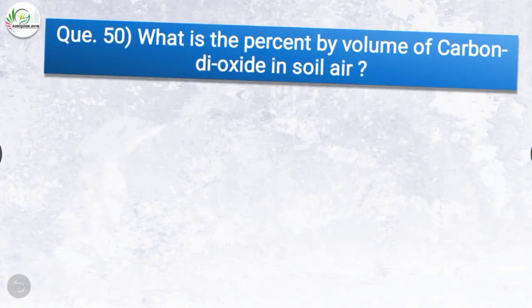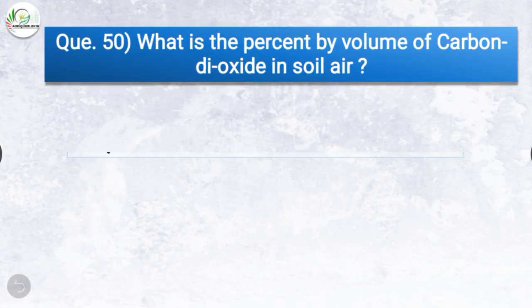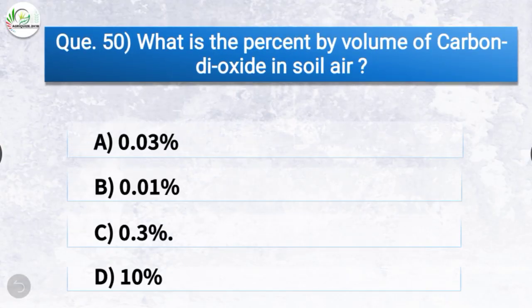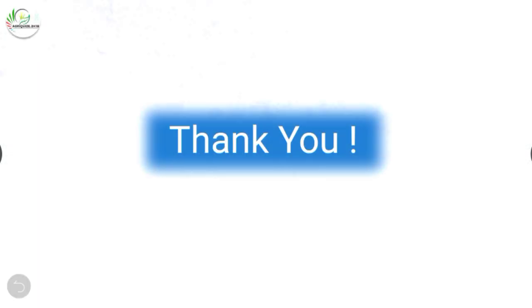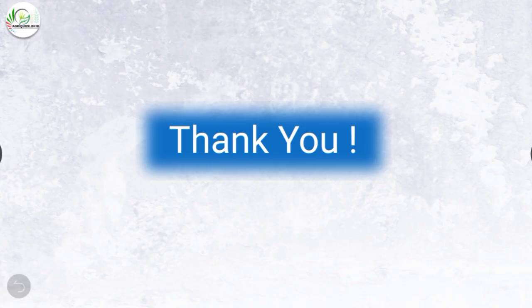Question number fifty: what is the percent by volume of carbon dioxide in soil air? The correct answer is option C, 0.3 percent. That was all. Thank you friends for watching our video, hope you find it useful. Please subscribe to our YouTube channel for more such videos. Thank you.